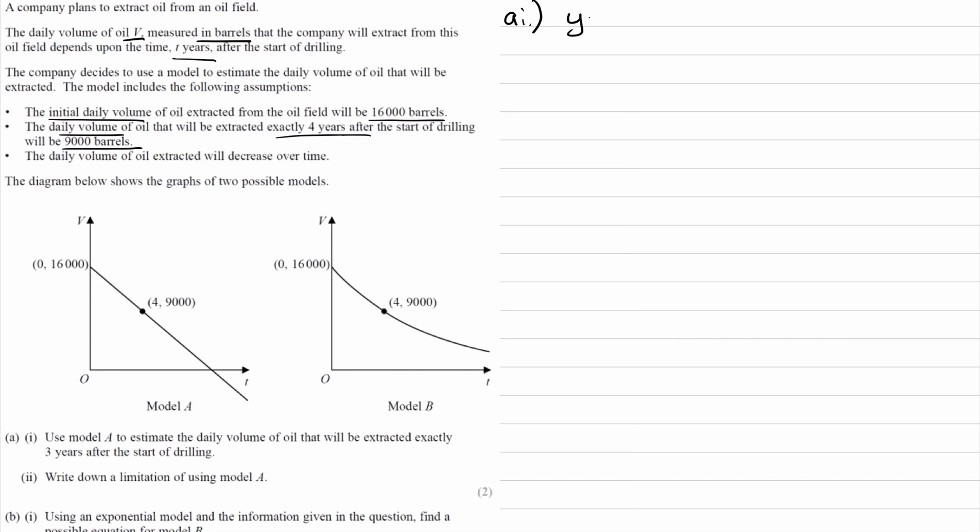The equation of a straight line is y equals mx plus c, but in this case it's volume against time, so we can use V equals mt plus c. We have the y-intercept already, so V equals mt plus 16,000. To check if that's in the right units, it is 16,000 barrels and V is measured in barrels, so that's consistent.